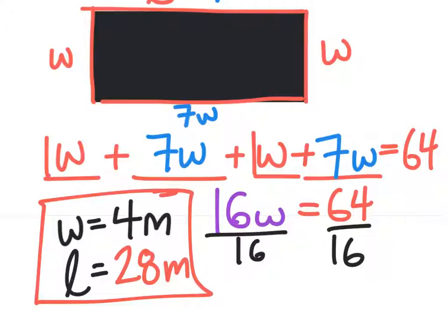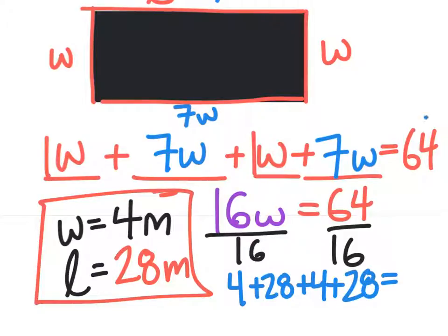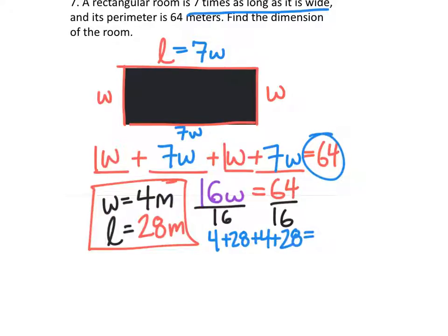Now that's my answer, but I highly recommend that you guys go back and just add these together. So you take 4 plus the 28 plus the 4 plus the 28, and just see what that equals. It needs to equal the 64 because it told us in the problem already that it was 64 meters, the perimeter. And if you add those together, you would find that it is 64 meters.